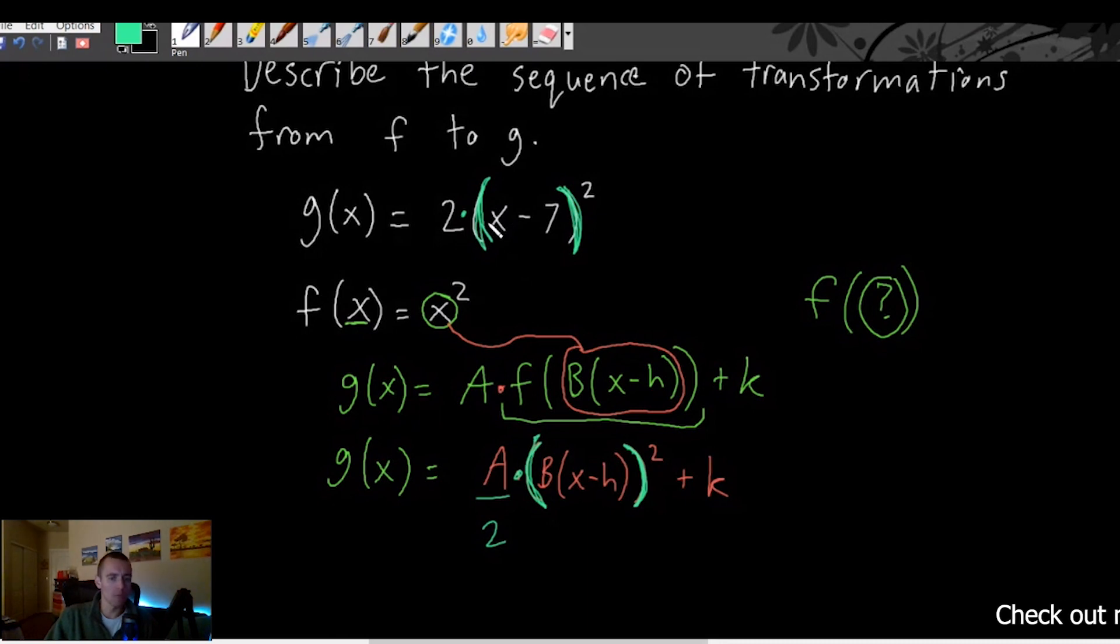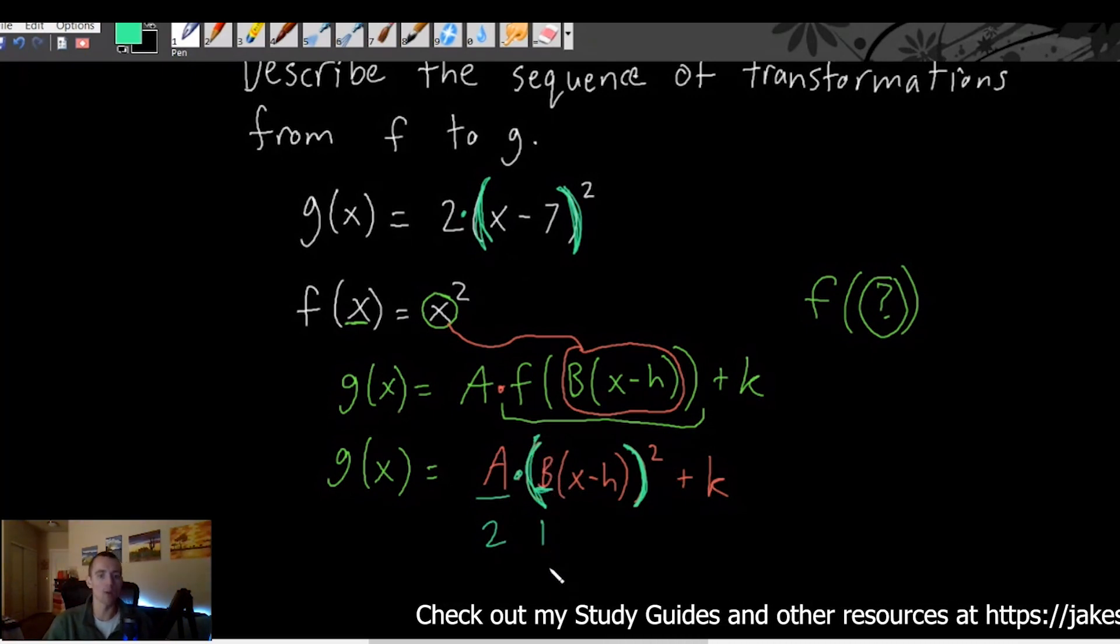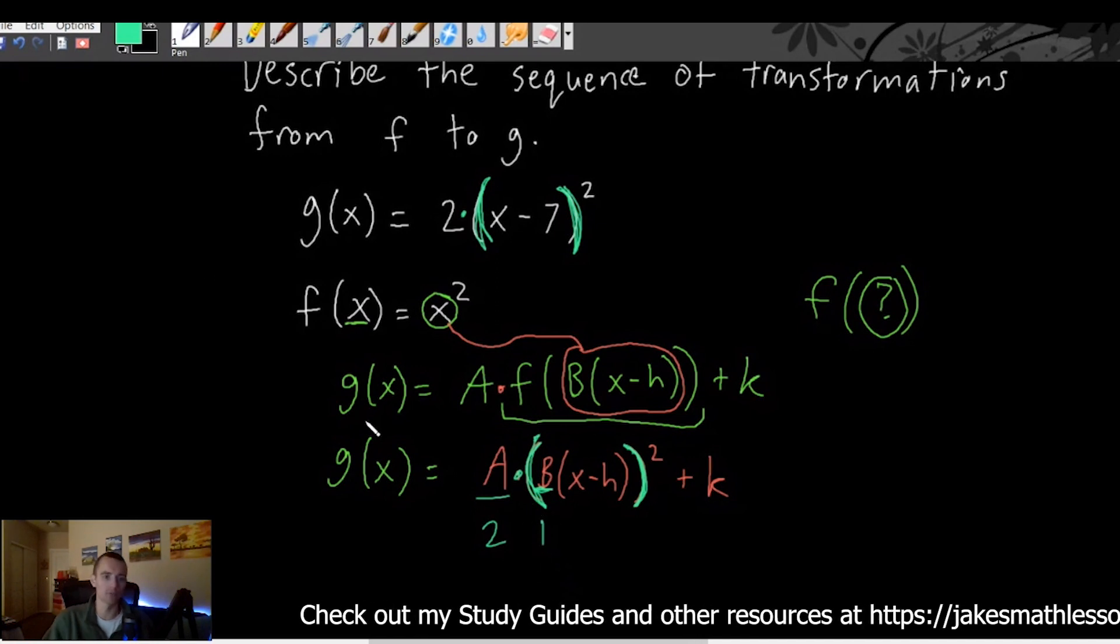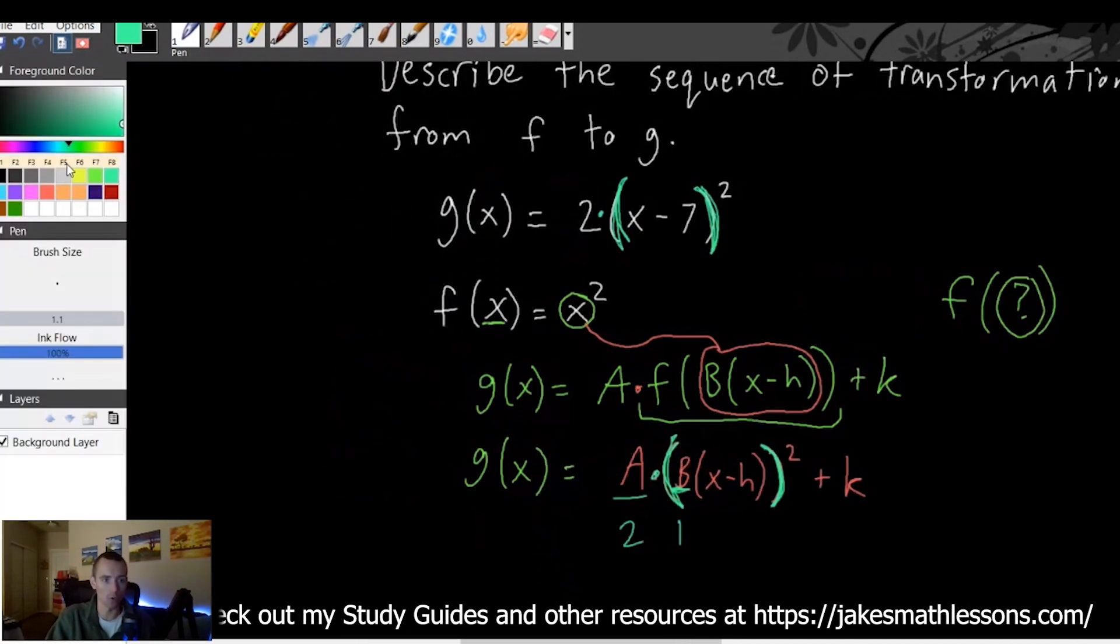We don't really have a B value which means that the B is basically implied to be 1. So there's not a B value acting in this case. So if our B is 1 that tells us that we're not applying any sort of transformation by stretching horizontally.